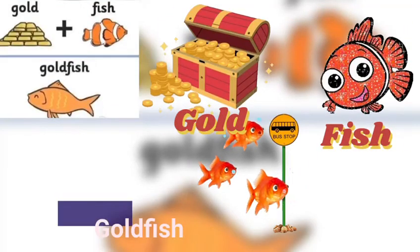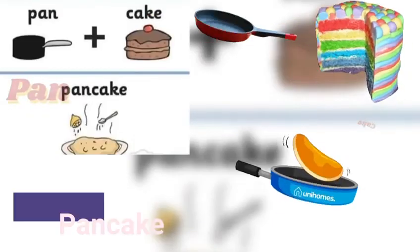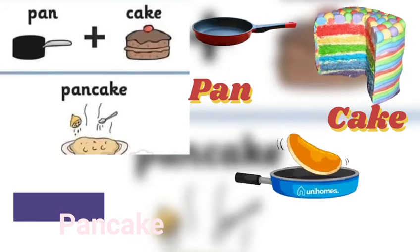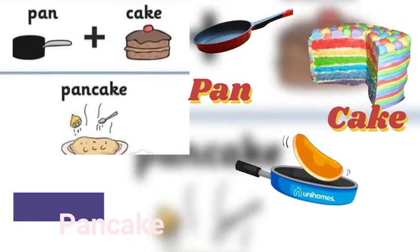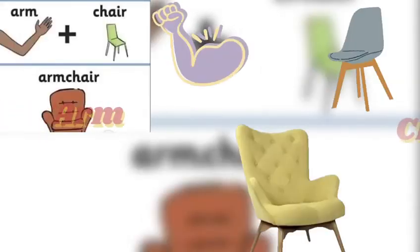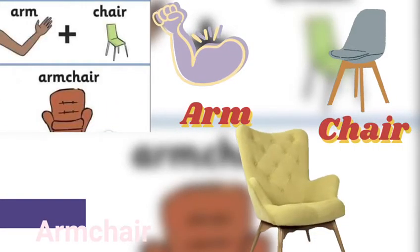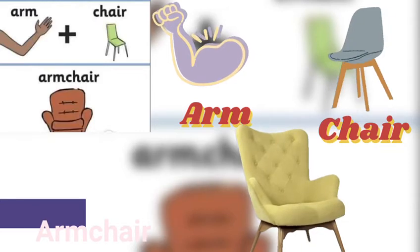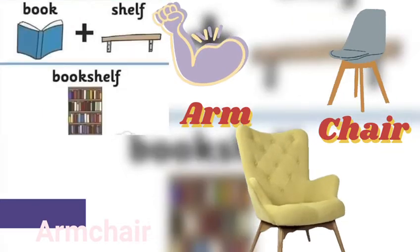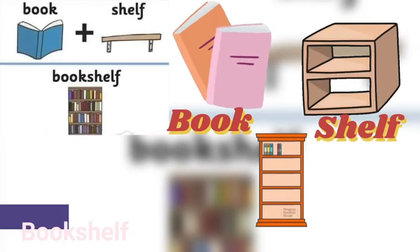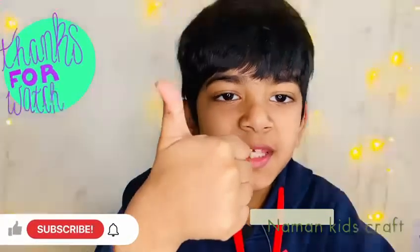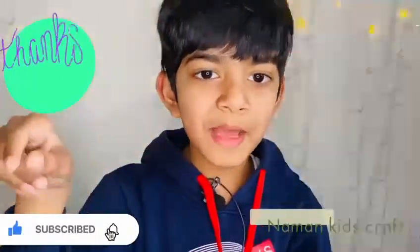'Star' is one object, 'fish' is the second object — you connect them into 'starfish'. 'Gold' is one object, 'fish' is the second object — you connect them into 'goldfish'. 'Pan' is one object, 'cake' is the second object — you connect them into 'pancake'. 'Arm' is one object, 'chair' is the second object — you connect them into 'armchair'. 'Book' is one object, 'shelf' is the second object — you connect them into 'bookshelf'.